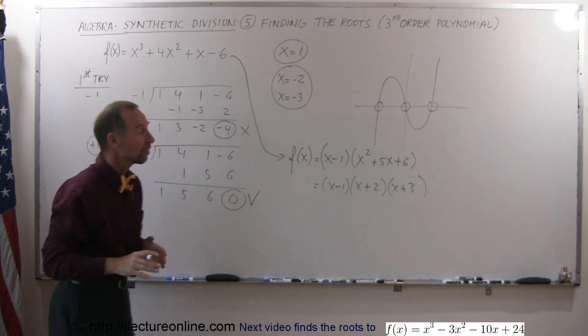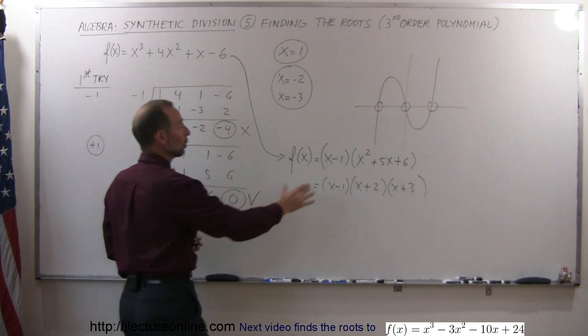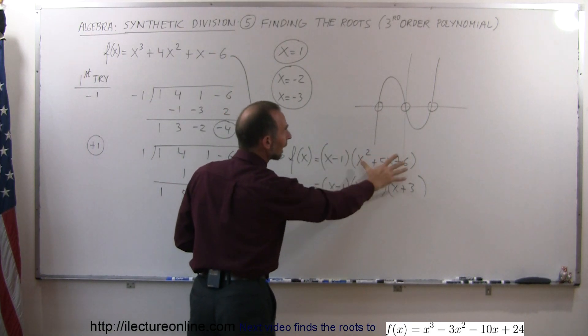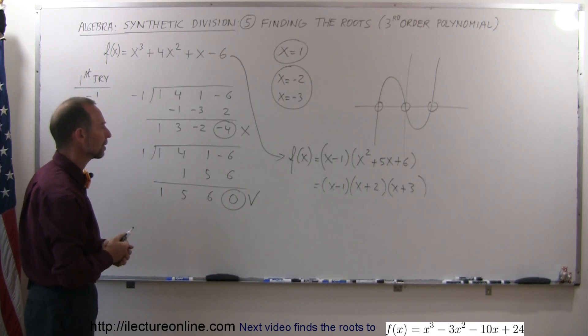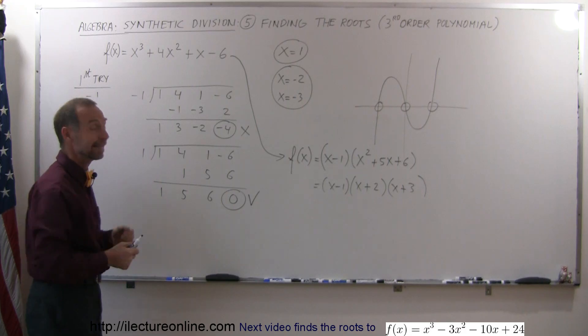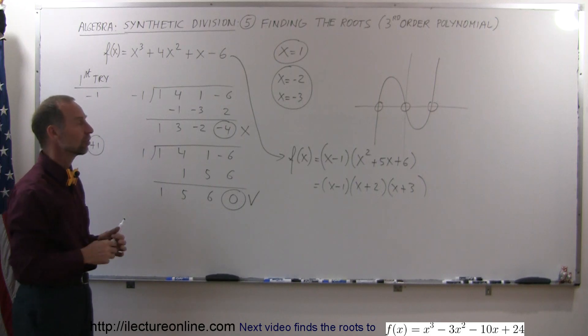So what's so nice about synthetic division is that it's the first root that's very difficult to find. Once you have it down to x minus something times a polynomial of second order, then the rest is easy to find. But it's that first root that's hard to find. And using synthetic division, you can see how you can find the root. In the next video, I can actually show you how you can zero in on the correct root using synthetic division. So I'll show you another example next.